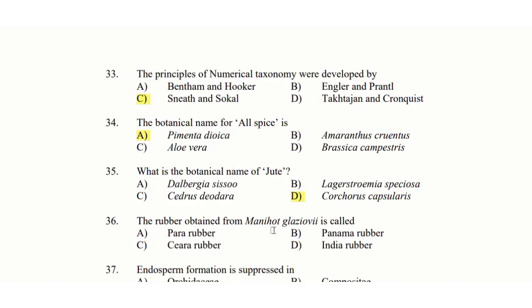36th question: Rubber obtained from Manihot glaziovii is called — option A: Para Rubber, option B: Panama Rubber, option C: Ceara Rubber, option D: India Rubber. The answer is option C: Ceara Rubber.